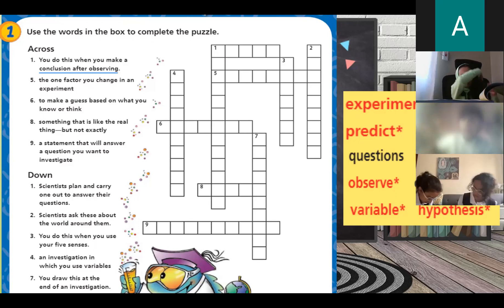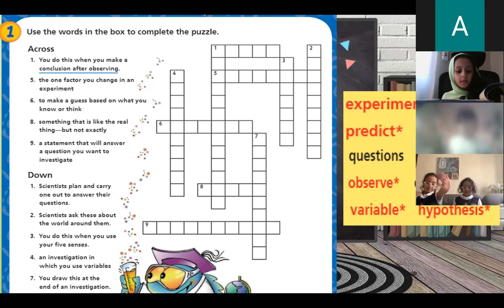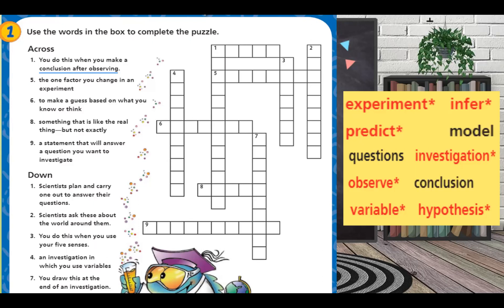Number one, who wants to participate with me? I don't understand the puzzle. Okay. Number one, across, over here. Across means from the left to the right. We are going from the left to the right.